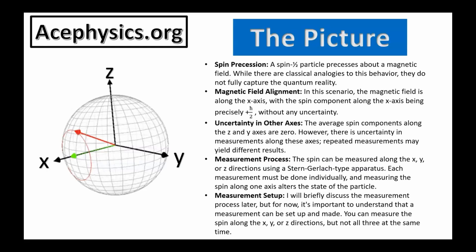Now I want to talk about the picture we're discussing in the problem I'm about to solve. On the next slide, there will be an animation. A spin-1-half particle precesses about a magnetic field. While there are classical analogies to this behavior, they do not fully capture the quantum reality. In this scenario, the magnetic field is along the x-axis. The spin component along the x-axis is precisely h-bar over two — there's no uncertainty.